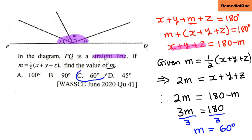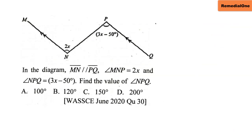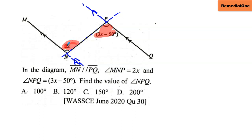For the next question, anytime they give you this kind of diagram, you can extend the lines. We extend this line down and up, and also extend the transversal line. When we have two parallel lines and a transversal, we can talk about alternate angles. Alternate angles are equal, so we can say that 2x must be equal to 3x minus 50.